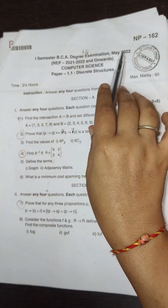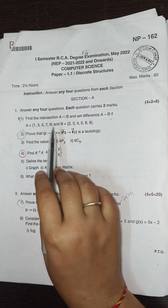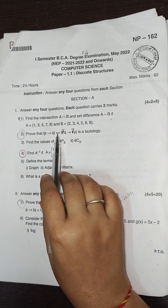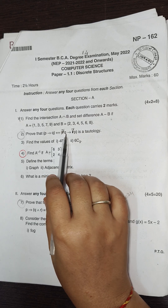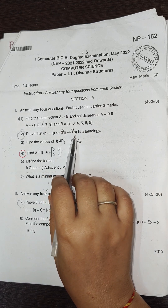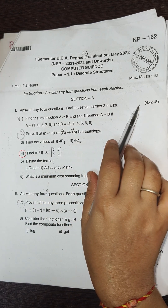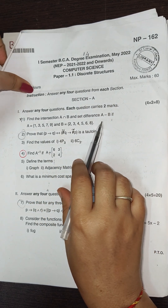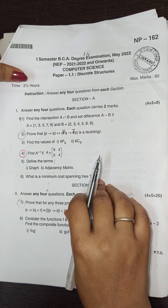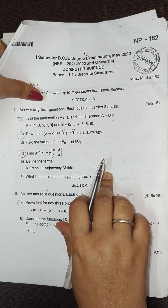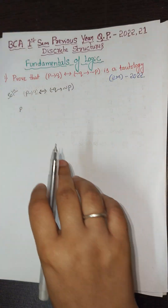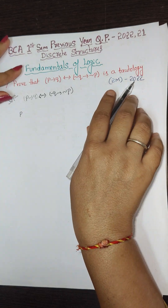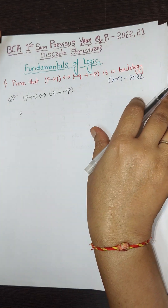Now we will move to the May 2022 question paper. They asked for two marks: prove that (p→q) ↔ (¬q→¬p) is a tautology. We need to prove this is a tautology. Tautology means the last column should have all true values — all T only. I wrote the question here for the 2022 question paper.